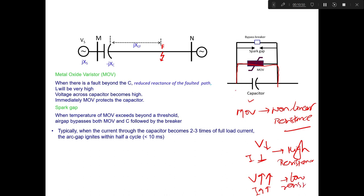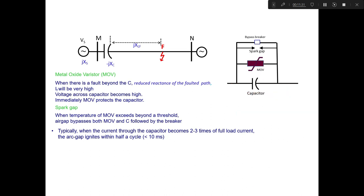During normal current flow, all current flows through the capacitor and ideally no current flows through the MOV. However, in case of high current, the capacitor is bypassed through the MOV once the voltage across the capacitor bank exceeds its rated level — for example, 53 kV. Only the current corresponding to that voltage level will continue to flow through the capacitor bank, and the remaining current passes through the MOV.